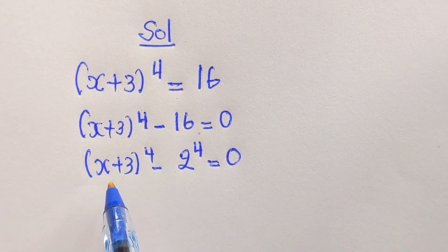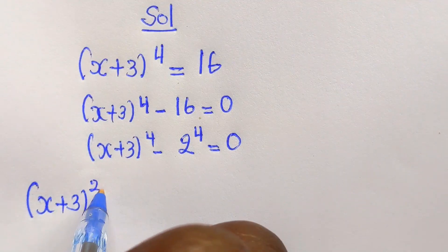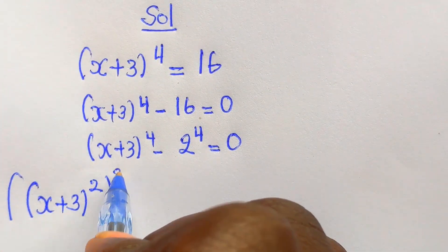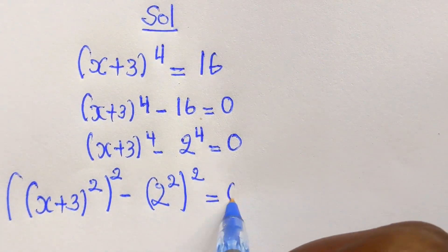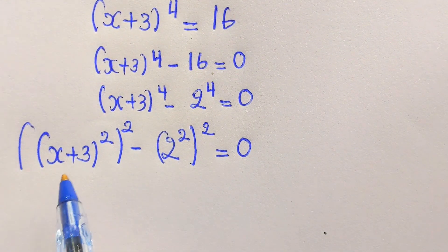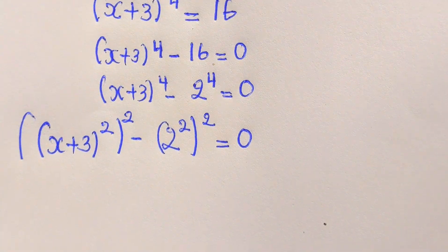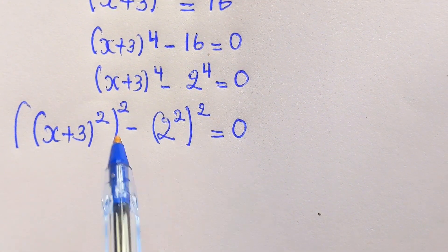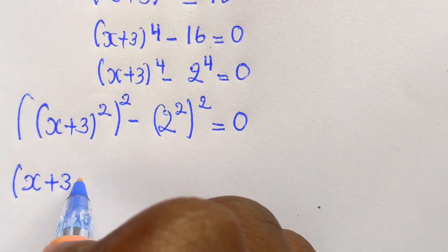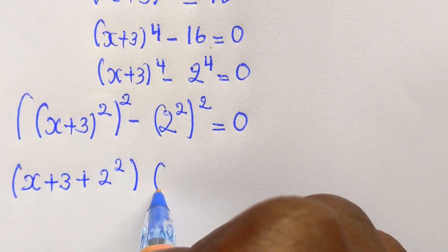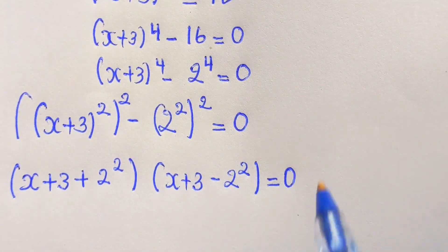At this stage, we write (x + 3)² squared minus 2² squared, which equals 0. This looks like a difference of two squares — a² - b². So we apply the formula to get [(x + 3)² + 2²] × [(x + 3)² - 2²] = 0, which gives [(x + 3)² + 4] × [(x + 3)² - 4] = 0.